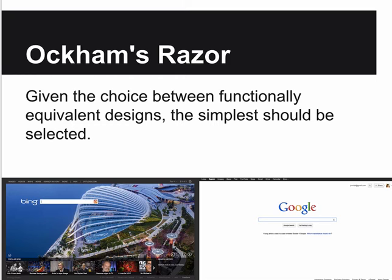Occam's razor tells us that given the choice between functionally equivalent designs, the simplest should be selected. Choose simple. Here's an example: Google versus Bing - which one's simpler, and which one did people choose mostly? I think you know the answer.